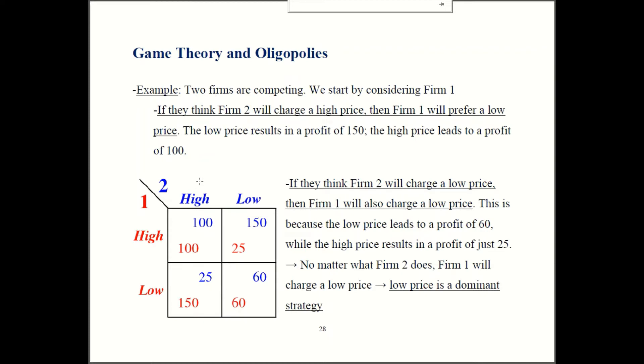Now let's look at the other possibility. Perhaps instead we think they're going to charge a low price. What should we do there? So if firm two is playing low, our options: we charge the high price. If we're playing high and they're playing low, our firm here in red is getting 25 million. If we both play low we get 60 million. So if they play low, I also want to play low.